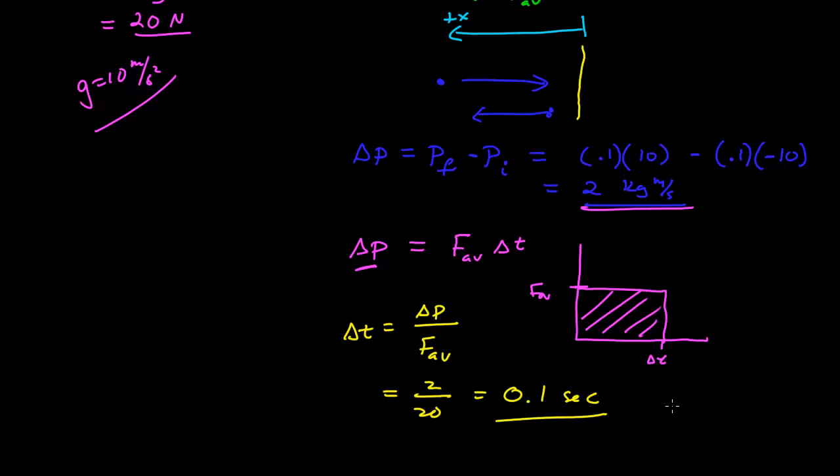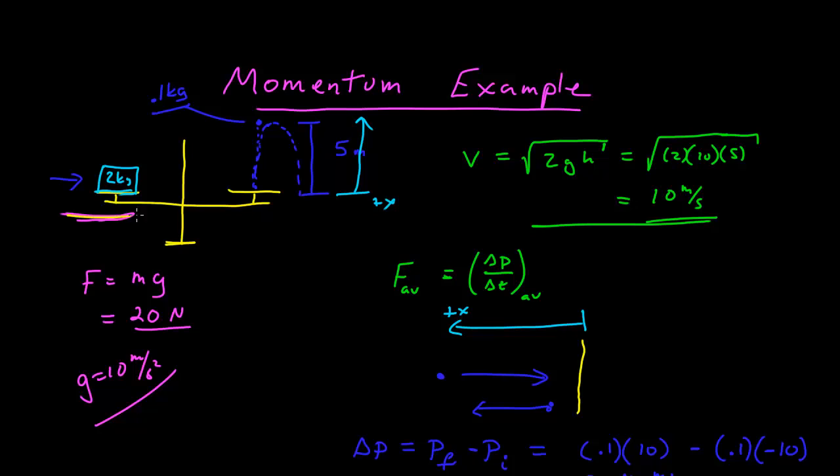And so, dropping each one of our rubber balls 10 a second will give us an average force of 20 newtons, and that average force of 20 newtons will then balance the 20 newton weight on the other side of the scale. And so, this is now a way to use momentum to solve problems in a very different way.